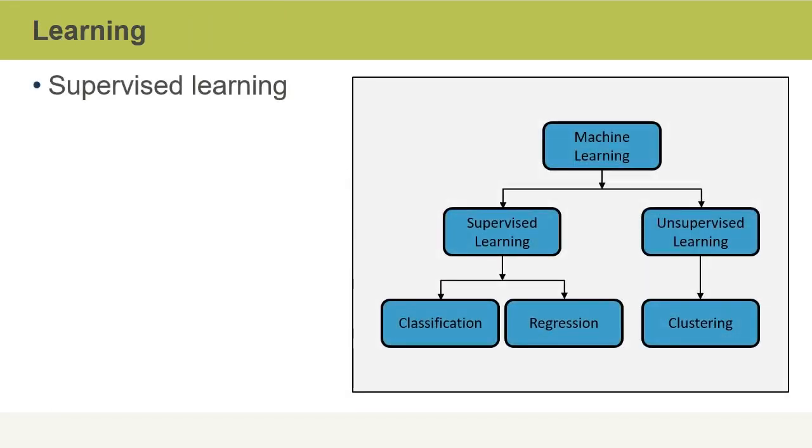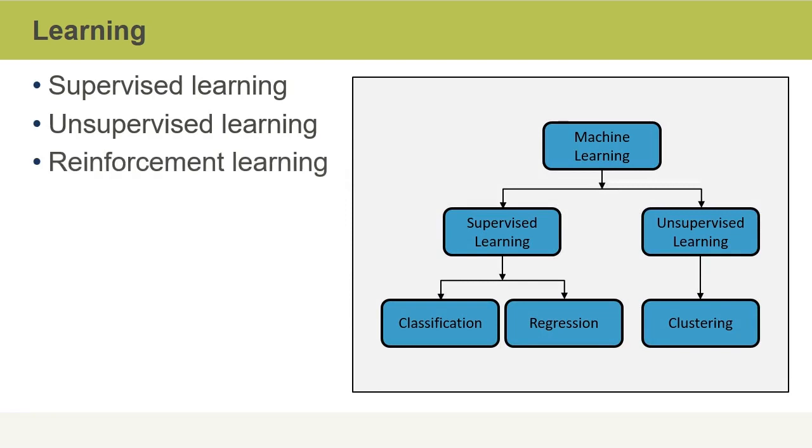Machine learning is categorized into two main types: supervised learning and unsupervised learning, but we also have what is called reinforcement learning, which is relatively new.